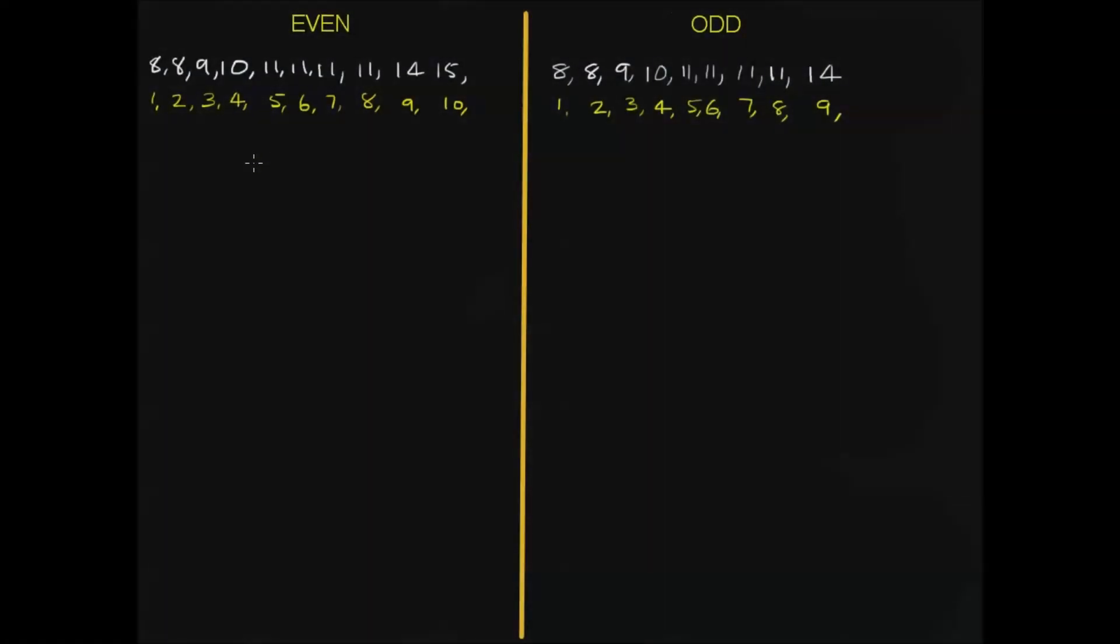We have here two sets of data. This set over here is even, so that means there's an even number of scores, there's 10.